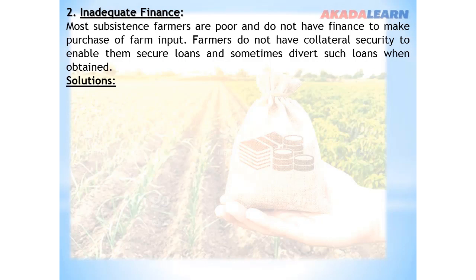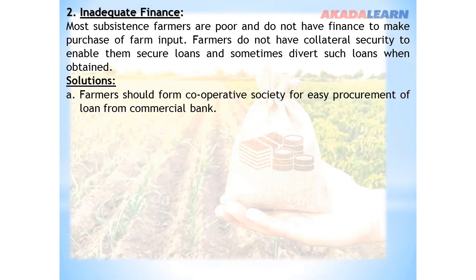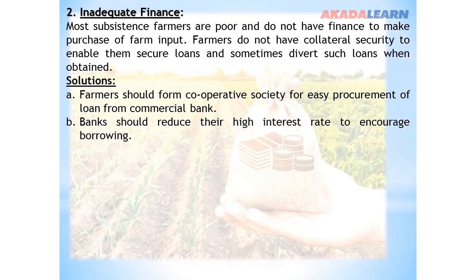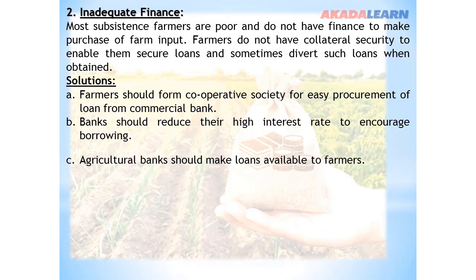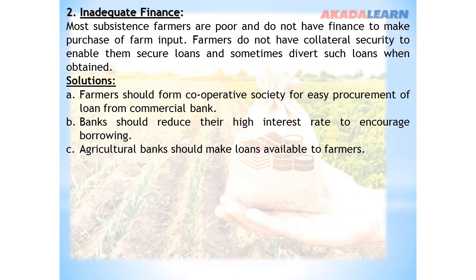What are the solutions to this problem? Farmers should form cooperative societies for easy procurement of loans from commercial banks. Banks should reduce their high interest rates and encourage borrowing by farmers. Agricultural banks should make loans available to farmers.